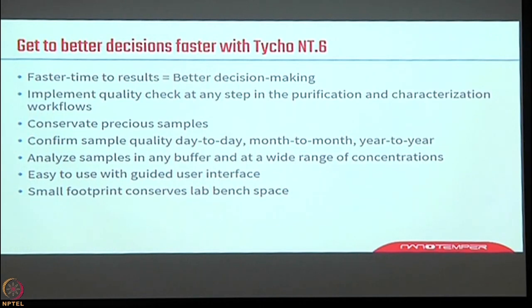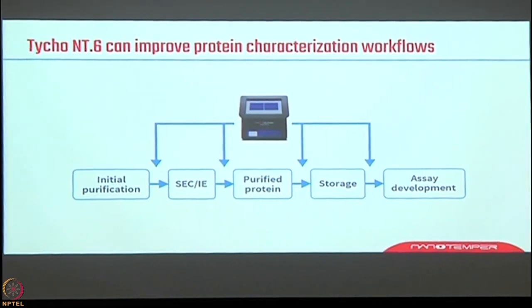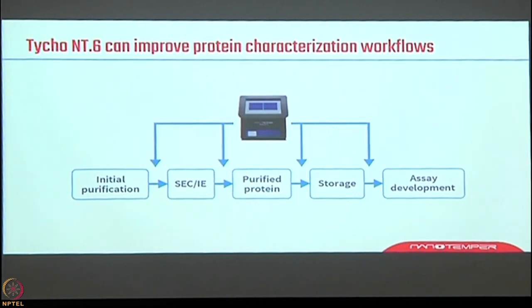You can analyze samples in a wide range from 1.5 micrograms per ml to 250 mg per ml. It is a very small instrument you can hand-carry. After initial purification you can check purity, after ion exchange chromatography or column purification you can again check purity, and once protein is purified you can check at which buffer and which pH to store it.